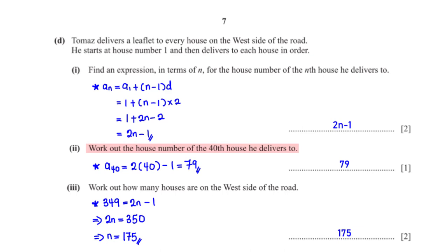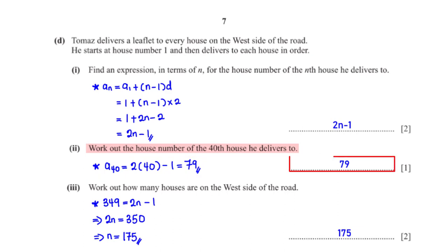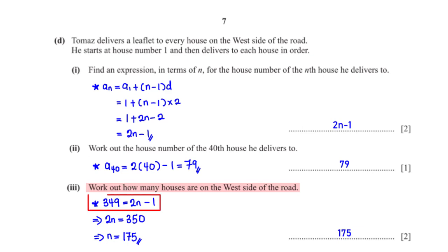Work out the house number of the 48th house he delivers to. We plug n equals 48 into 2n minus 1, giving 2 times 48 minus 1 which equals 95. Work out how many houses are on the west side. We equate the final house number 349 to 2n minus 1; adding 1 gives 2n equals 350, so n equals 175.